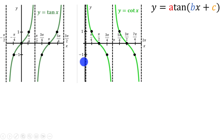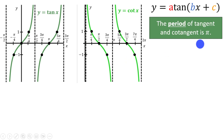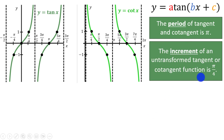Here I have the general form of the tangent and cotangent functions. The period of tangent and cotangent is pi, which is different from sine and cosine, which are 2pi. For trigonometric functions, we have important key points on the graph at every quarter of the period. In the case of tangent or cotangent, the period is pi, so we will have important key points on the graph at every pi over 4 radians.